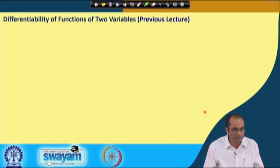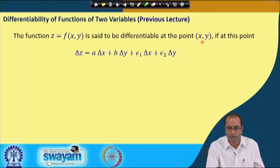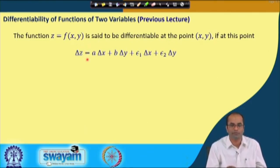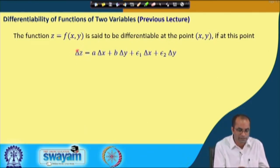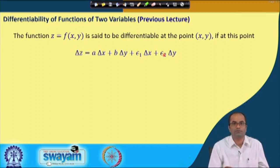Recalling from the previous lecture: a function z is said to be differentiable at a point (x, y) if we can express delta z — the variation in z when we vary x by delta x and y by delta y — as: delta z = a·delta x + b·delta y + epsilon_1·delta x + epsilon_2·delta y, where epsilon_1 and epsilon_2 must go to 0 as delta x and delta y go to 0.